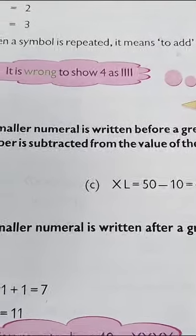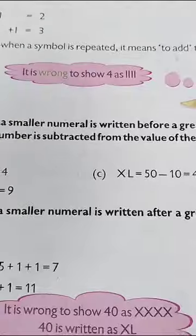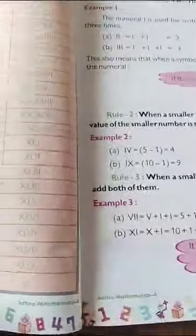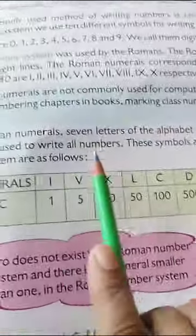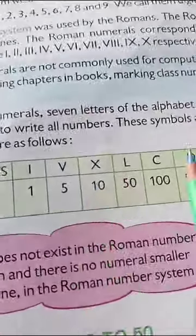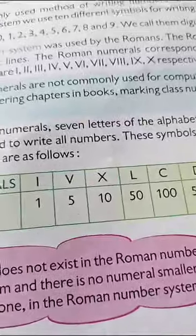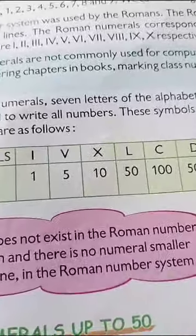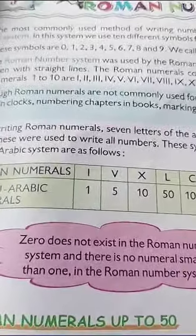V, L and D cannot be repeated. V, L and D cannot be repeated. It means V, V, V or L, L or D, D. V, L or D cannot be repeated. Okay? Understood?